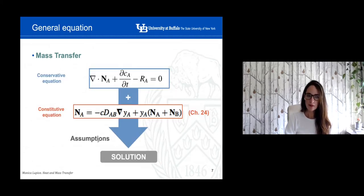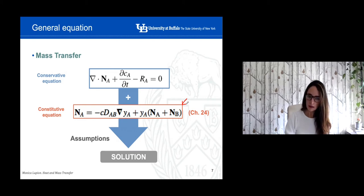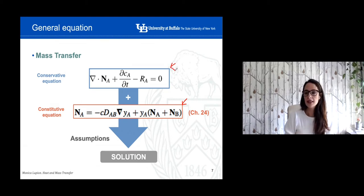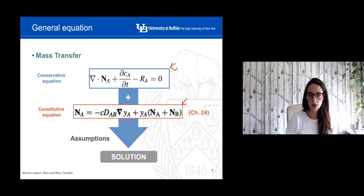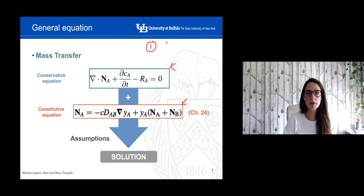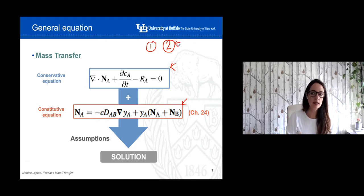In mass transfer, when we focus on molecular diffusion, we are going to apply the Fick rate equation that we're already familiar with, and we can also apply the general equation I just explained. This is the strategy we're going to follow to solve mass transfer problems for molecular diffusion. Remember that there are two different transport modes: one is molecular diffusion, which is the focus of today's presentation, and the second is convective mass transfer. We're going to study convective mass transfer in the next lectures, but today we focus on molecular diffusion.